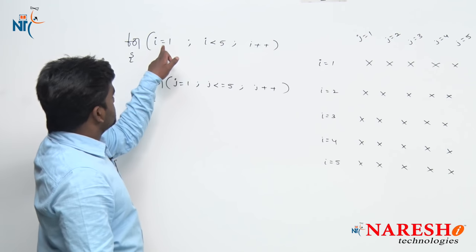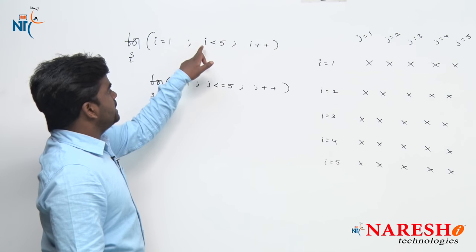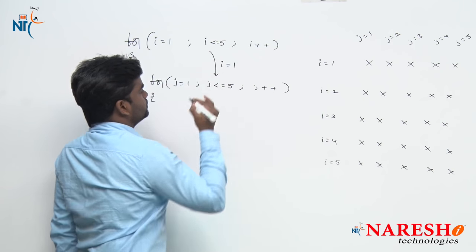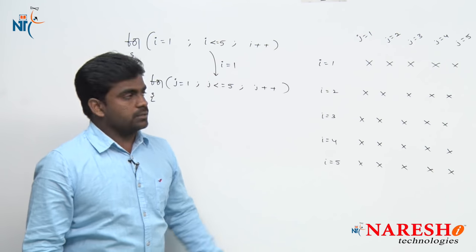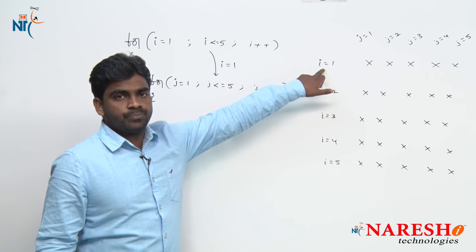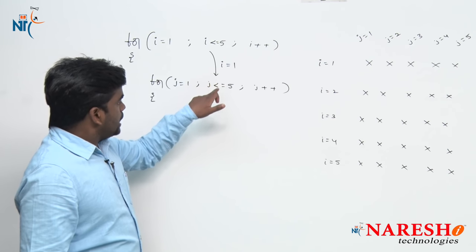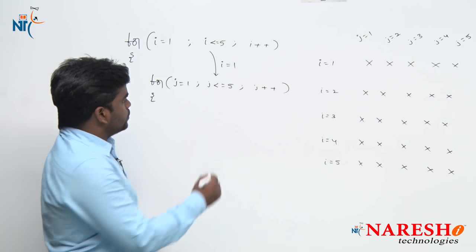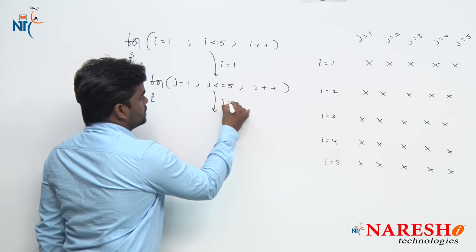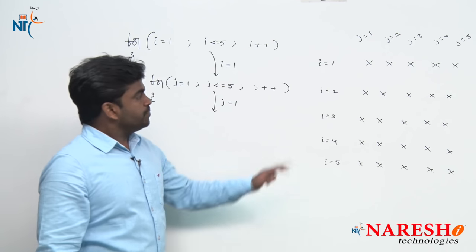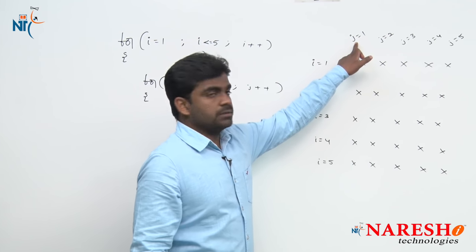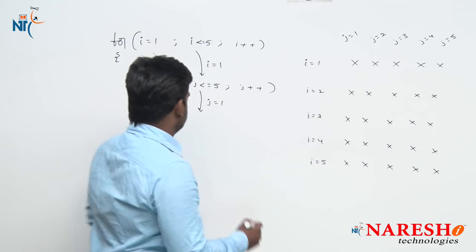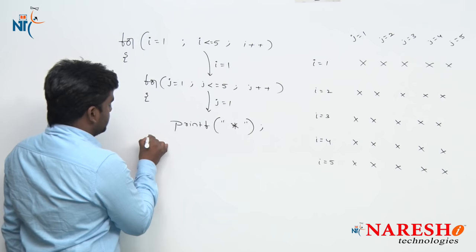How does it execute? First, i value is 1; 1 is less than or equals to 5, condition is true. With i value 1, the control moves inside — that is, we are now printing the first row. With i equals 1, j value starts at 1; 1 is less than or equals to 5, control moves inside. At i equals 1 and j equals 1, this is the intersection point, so we print one star using printf.